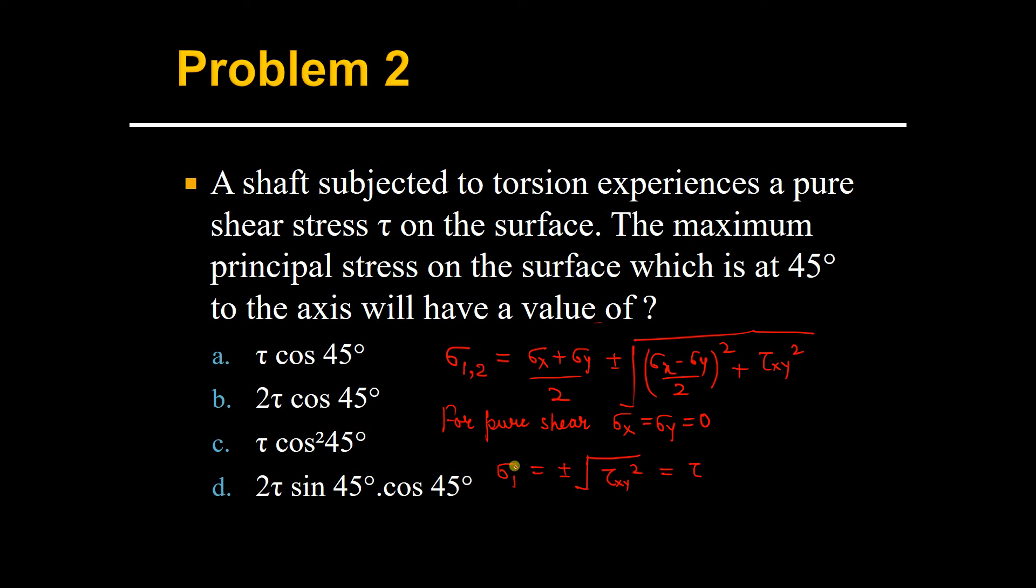So this is your major principal stress. Now you just need to check out which option is giving you tau, because in the question they have mentioned the keyword pure shear stress. Pure shear stress means your sigma x and sigma y has to be 0, and your sigma 1, which is your maximum principal stress, has to be tau.